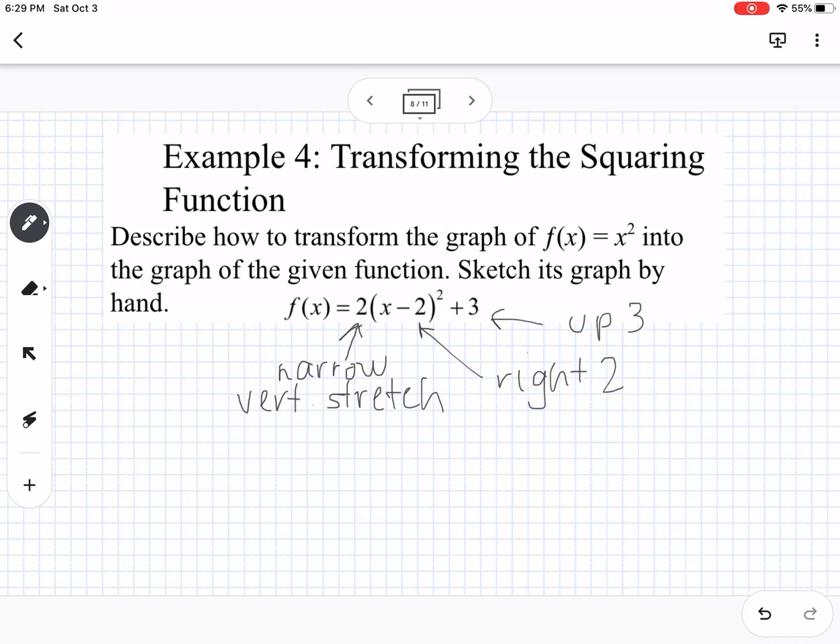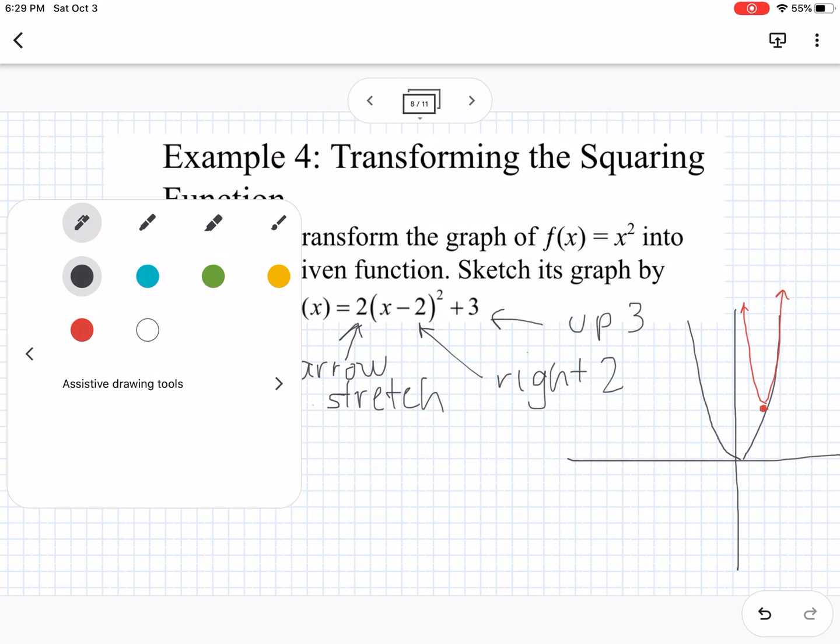So if we are to sketch that, our normal graph looks kind of like that. And then I'll switch colors here. So our transformation, we would move to the right 2 and up 3. So there would be my new vertex, and then it would be narrower. So that would be the transformed function.